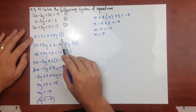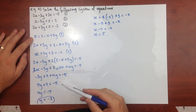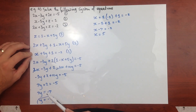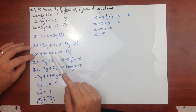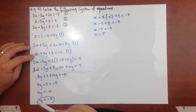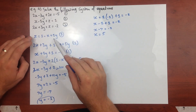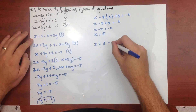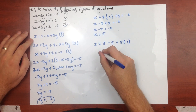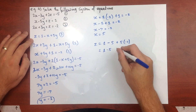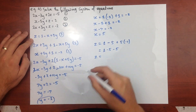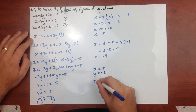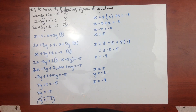Now I use the rearranged equation two to find z: z equals 1 minus x plus 5y equals 1 minus 5 plus 5 times (negative 1), which gives 1 minus 5 minus 5 equals negative 9. So our three solutions are x equals 5, y equals negative 1, and z equals negative 9.